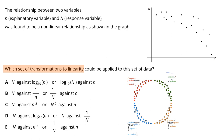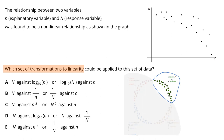Notice that our graph is similar to the top right corner of this diagram, so we cover the rest of the diagram, and if we look at the transformations that could be applied to linearize this data, we notice that the answer we are after is option C.